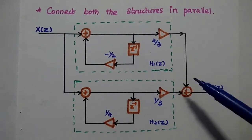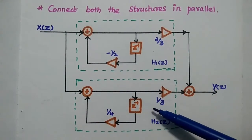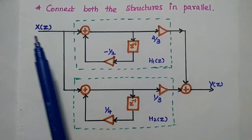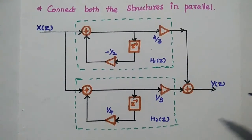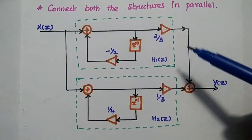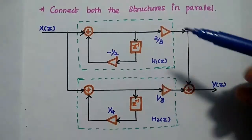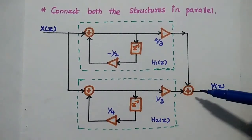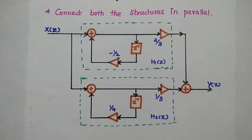Finally, we connect both structures in parallel. In parallel form, all the system functions share the same input — the input is common for all structures. The output is obtained by adding the outputs of each transfer function. H1(Z) and H2(Z) are connected in parallel, and this is the final parallel form realization of the given system.